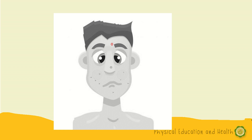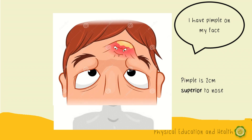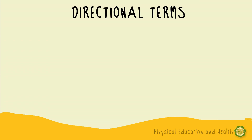Imagine you are a child in a picture and you are sad because you have a huge pimple on your face — but where exactly on your face? On your face is non-specific, but if you are going to use directional terminologies, we can identify the location of the pimple or other parts of the body. For example, the pimple is 2 cm superior to the nose. And that will lead us to directional terms.